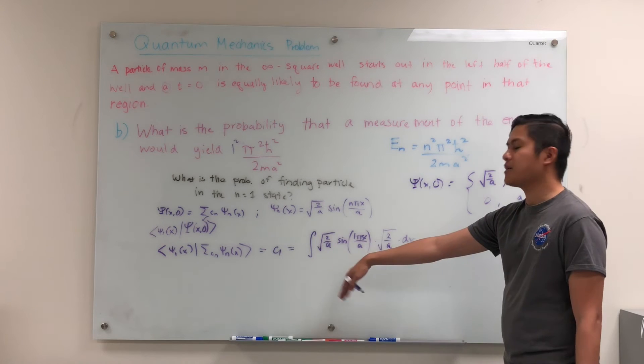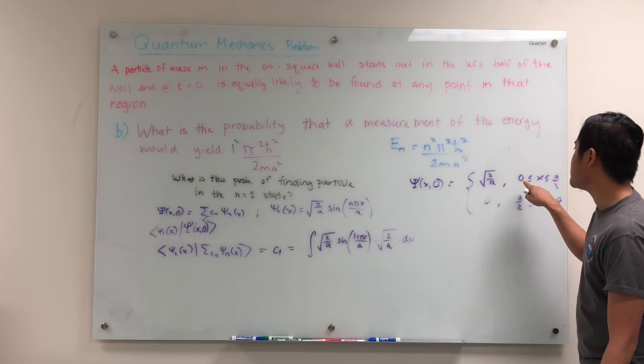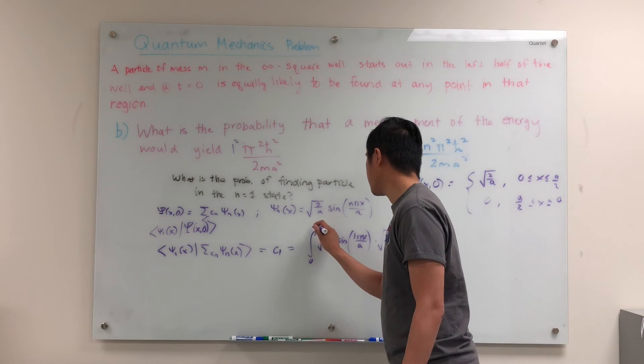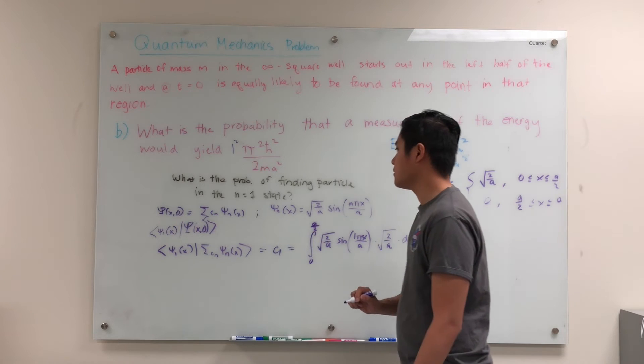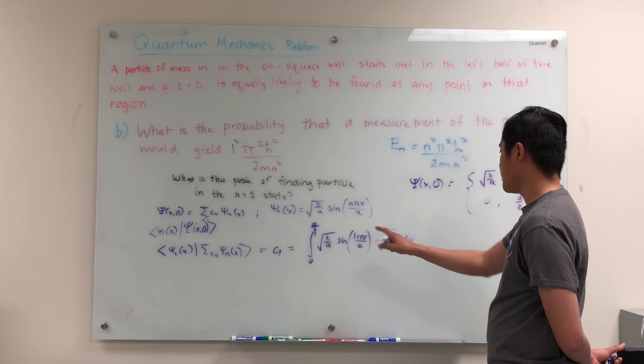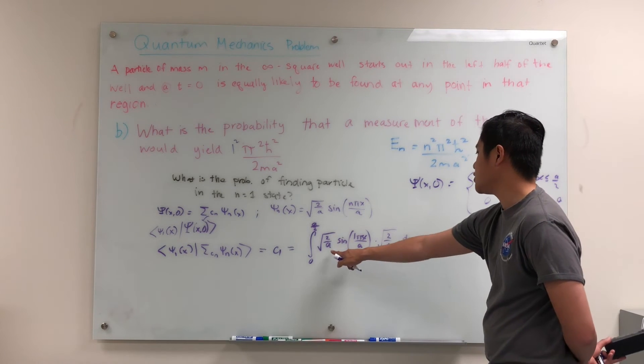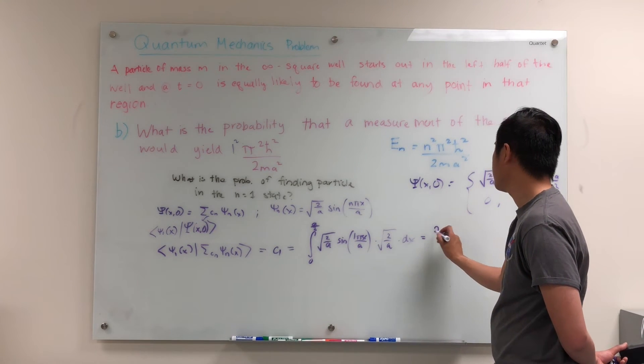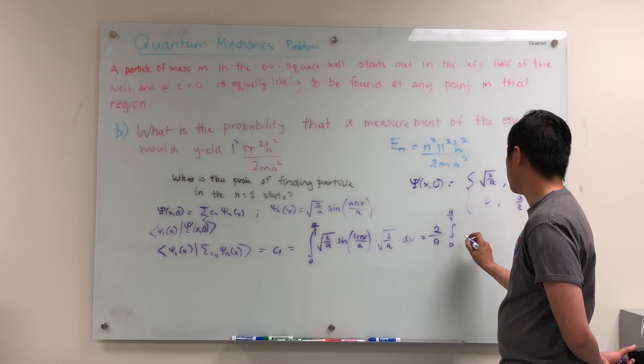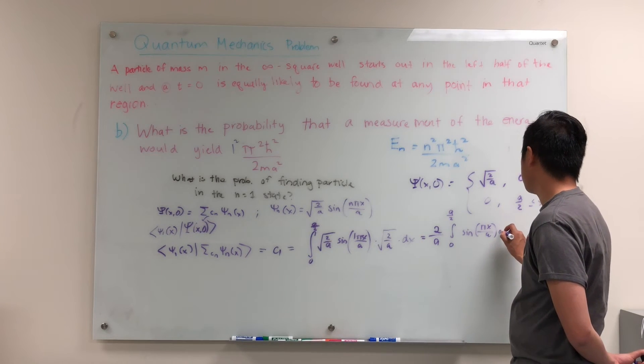Now we have to integrate this over all space where this is defined, but since psi x of 0 is only defined between 0 and a over 2, we're just going to have 0 to a over 2 right there. So we just have to perform this integral here. So we'll have the 2 root 2s over a. It's going to come outside like that. So we'll have 0 to a over 2 sine pi x over a dx.